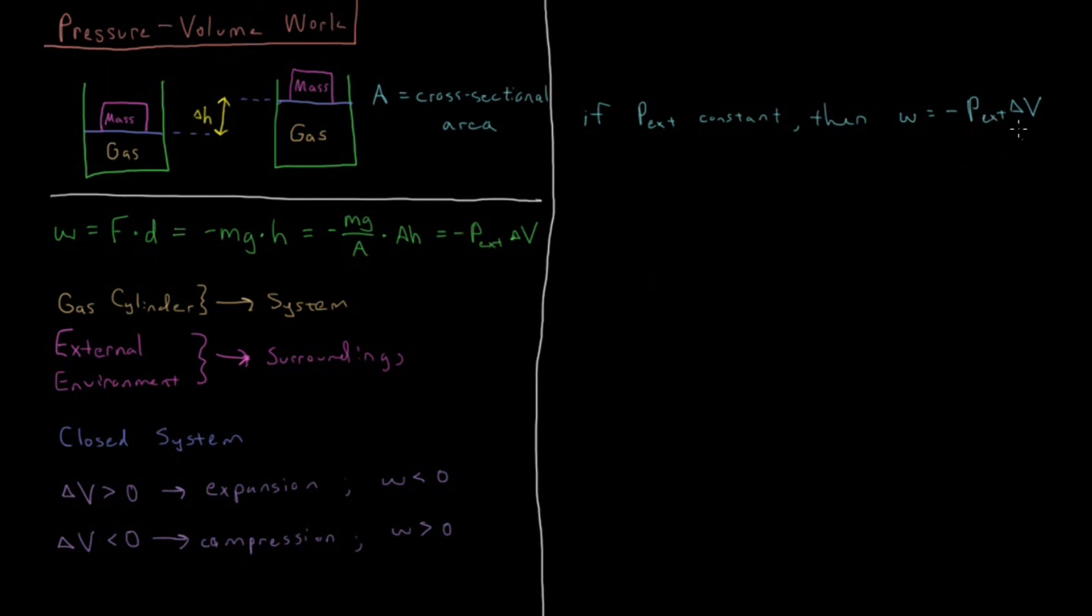And if the external pressure is a function of the volume of the gas, if it changes as the gas volume changes, then we make things slightly more complicated. Then we just need to do an integral instead. The work we do is going to be the integral from the initial volume to the final volume, the external pressure as a function of volume, integrated with respect to volume. So this is the generalization of the work done on a gas during a compression or expansion event, and that's just generalized to if the pressure is changing during the course of that expansion.